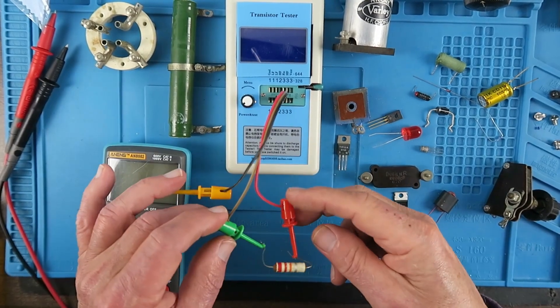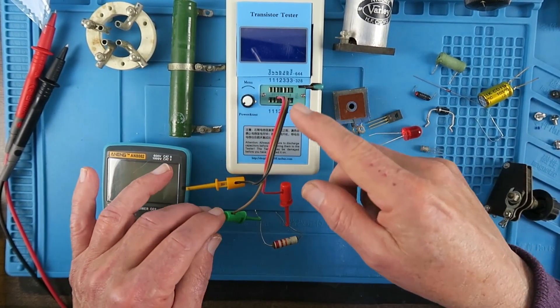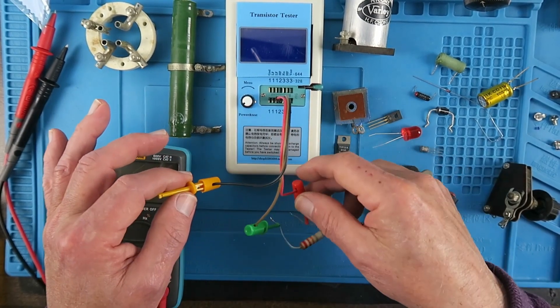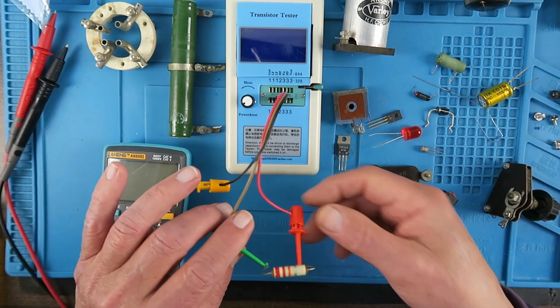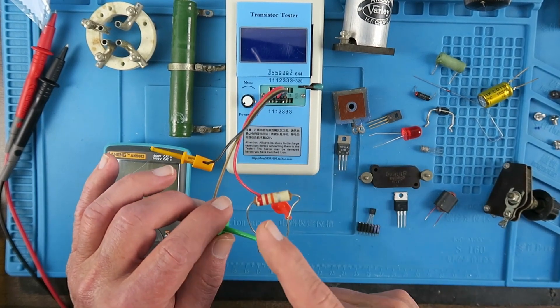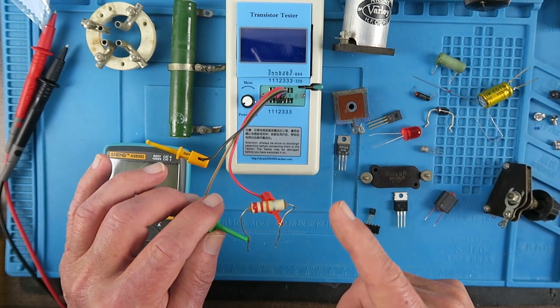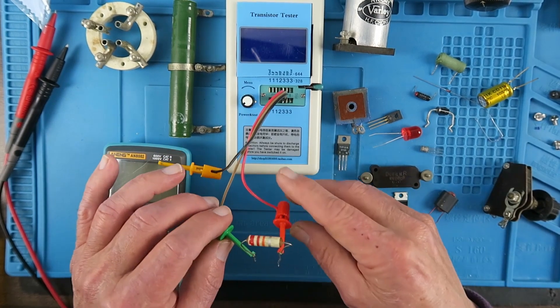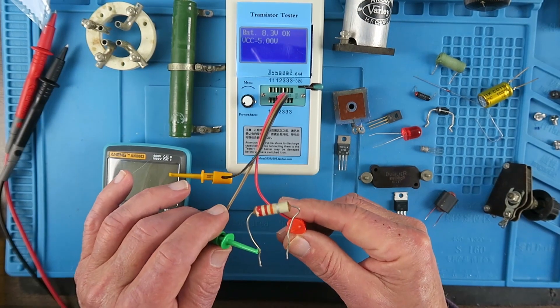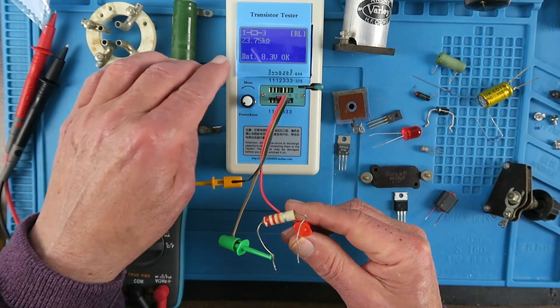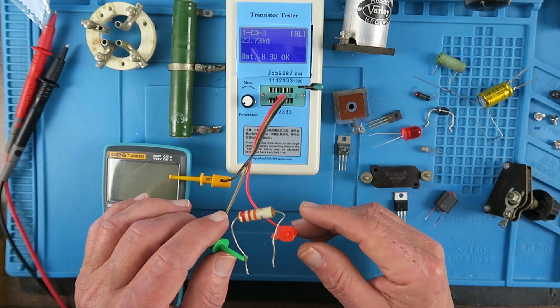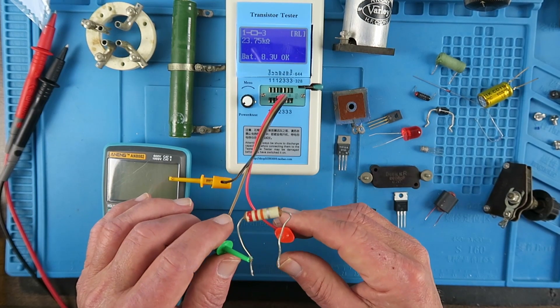Testing resistors is not particularly tricky. It is a good idea to make up a lead with some little test clips that enable you to test some components more easily. This is marked as 22,000 ohms, 10%. This is the oldest one I could find out of an old radio. And that's measuring 23.75k, so that's within 10% of 22, so it's still good.